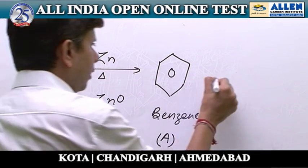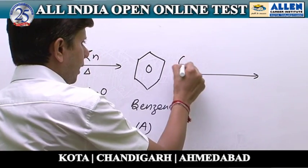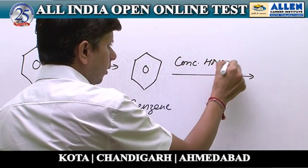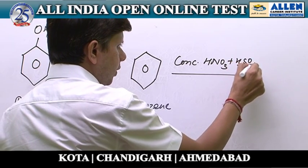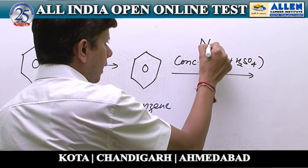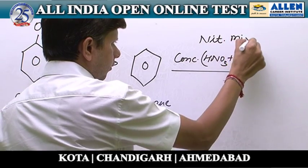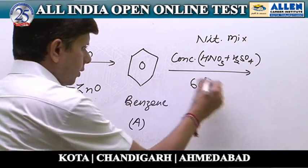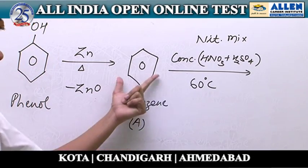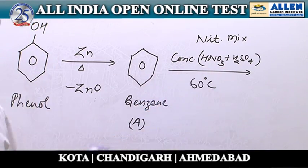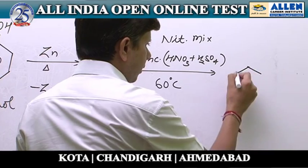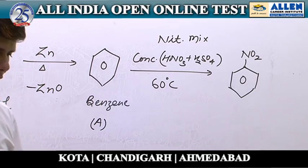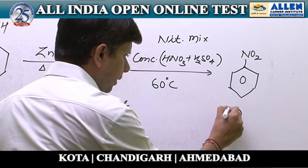Now, compound A is to be reacted with nitrating mixture. The nitrating mixture is a mixture of concentrated nitric acid plus sulphuric acid. The temperature condition is 60 degree Celsius. Reaction of benzene with nitrating mixture will give nitrobenzene. So the product B is nitrobenzene.